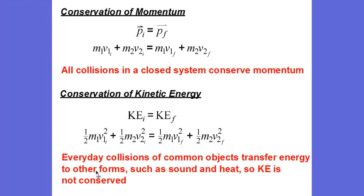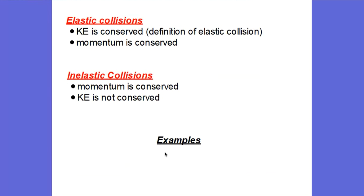In everyday collisions, kinetic energy is not conserved. So that means all the collisions that we're used to seeing every day, anywhere we go and anything we do, those are examples of inelastic collisions. So let's look at some examples of inelastic collisions first, and then we will show you where we can observe elastic collisions.